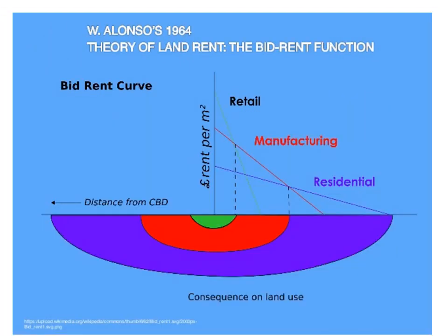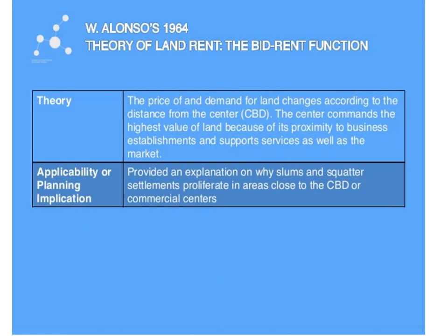This slide refers to the theory of land rent, which considers various sectors such as retail, manufacturing and residential, and their distances from the central business district and their effect on land uses. This theory, the bid-rent function, was proposed by Alonso in the year 1964. The theory states that the price of land and demand for land changes according to distance from the central business district. The center commands the highest land value because of its proximity to business establishments, support services and the market. It also provides an explanation of why slums and squatter settlements proliferate in areas close to the CBD or commercial centres.